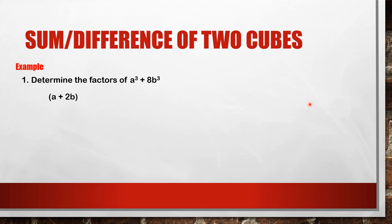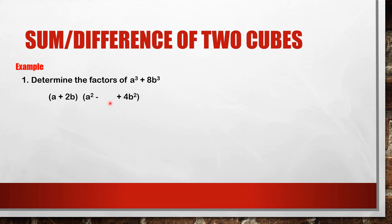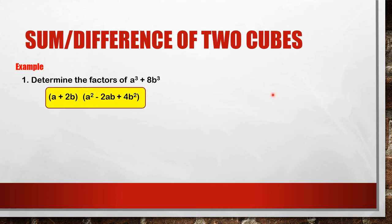This binomial is then multiplied by a trinomial. For the trinomial: the square of a is a squared, and the square of 2b is 4b squared. The middle term is negative so that when expanded it yields zero net cross terms. To get the middle term, we multiply a and 2b, giving 2ab. So the factor of a cubed plus 8b cubed is (a plus 2b)(a squared minus 2ab plus 4b squared).